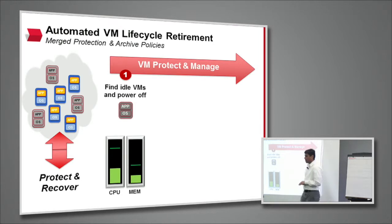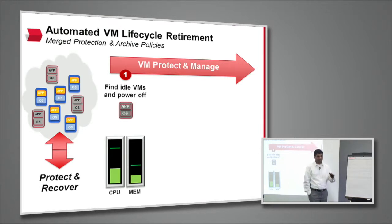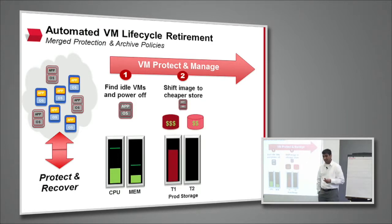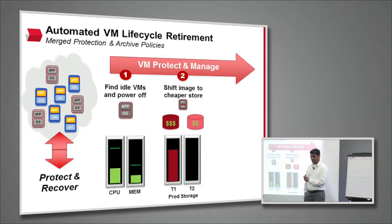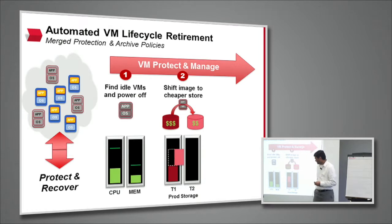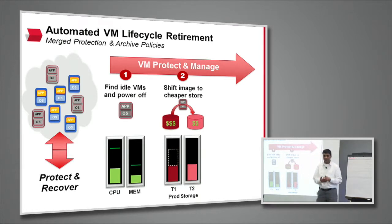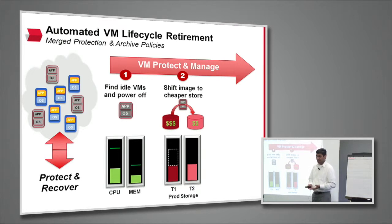If the VM is powered off and still not being used for X number of days based on a policy, we don't keep it on tier one storage. We go back in and storage vMotion it or copy it off to a secondary tier two storage. So we take the VMDK from tier one, move it to tier two. It's still in the VMDK context and still in the vCenter virtual infrastructure context.